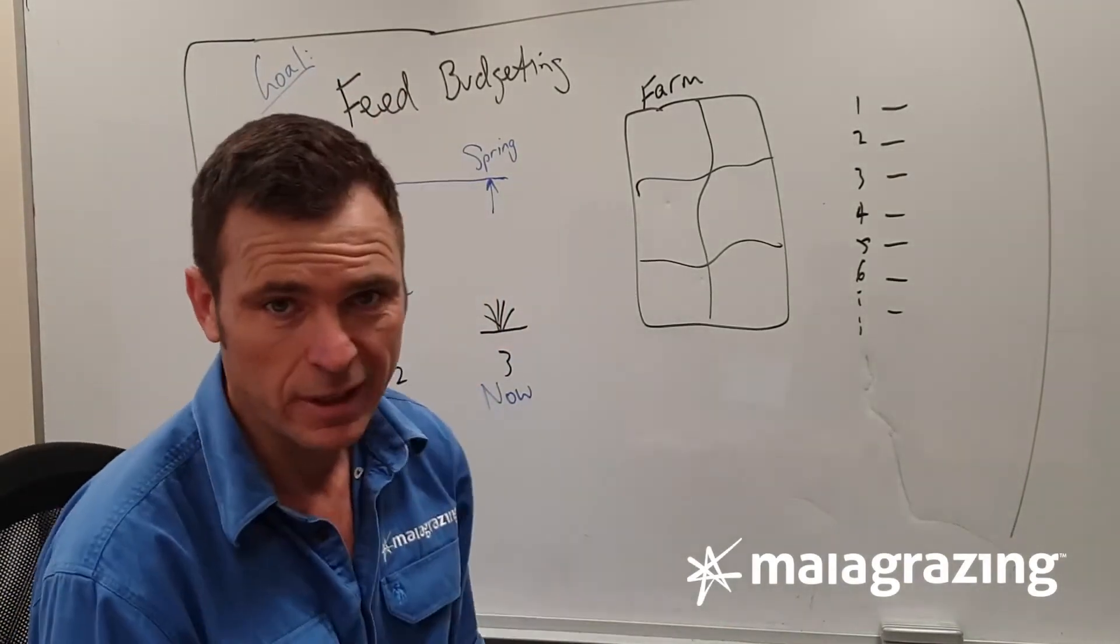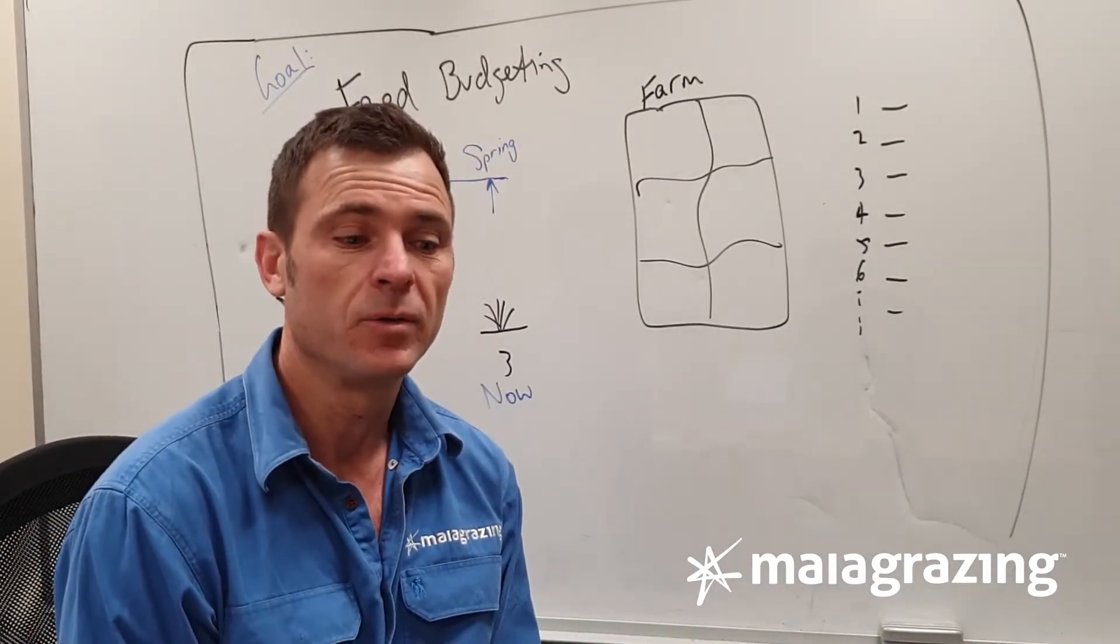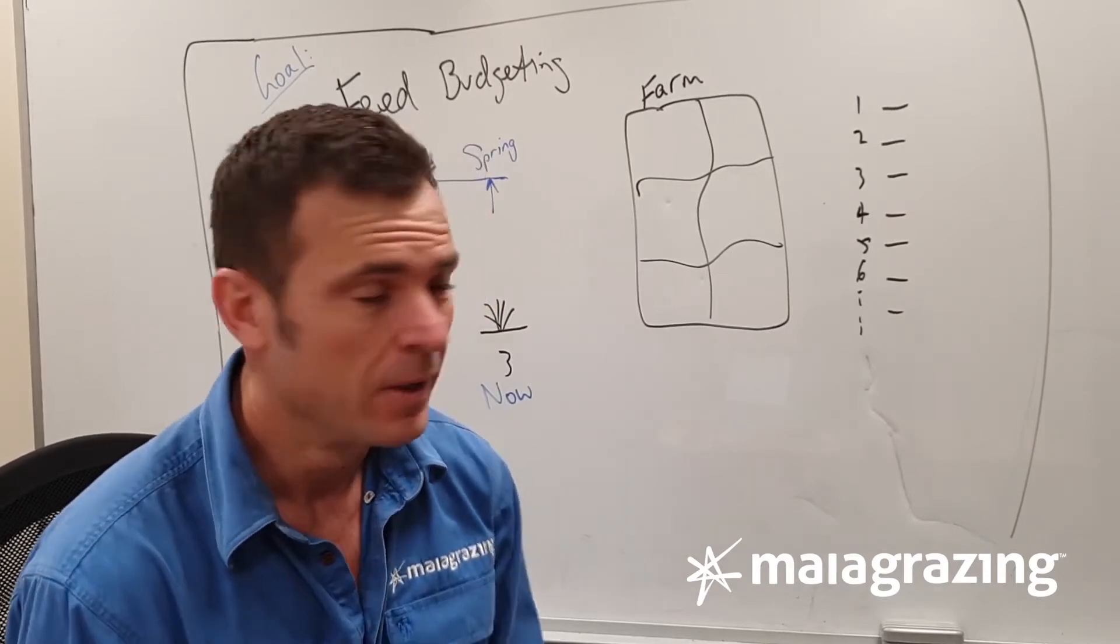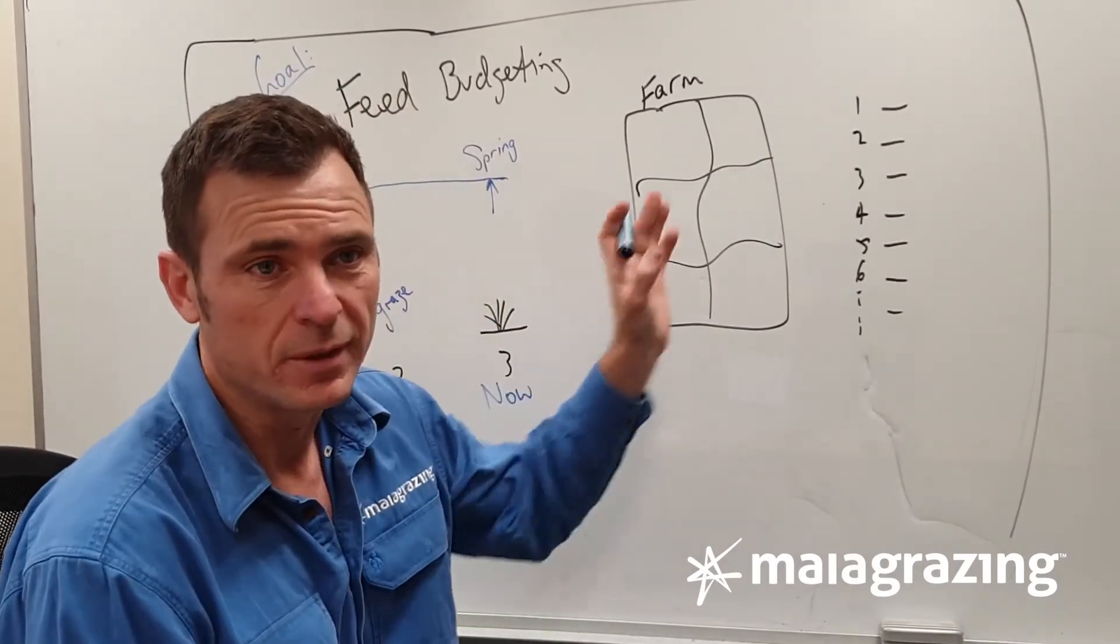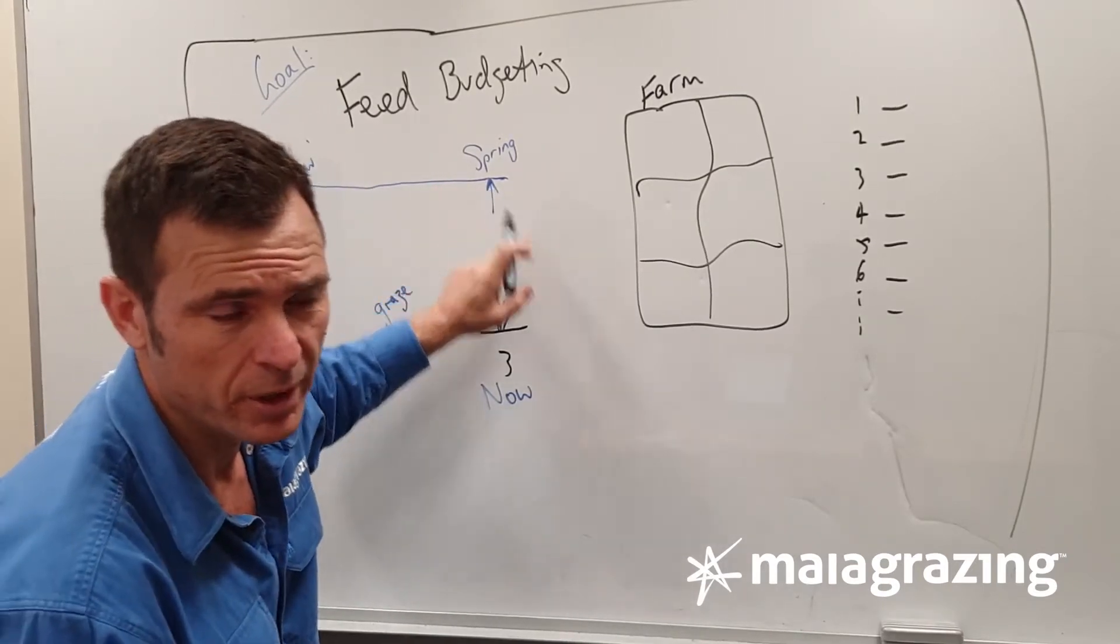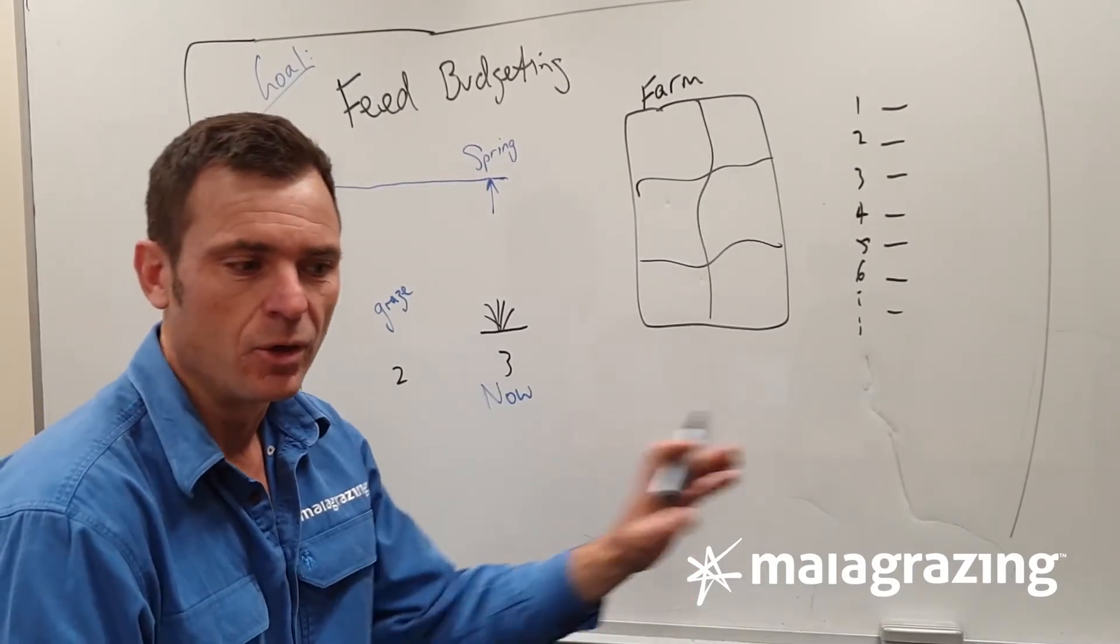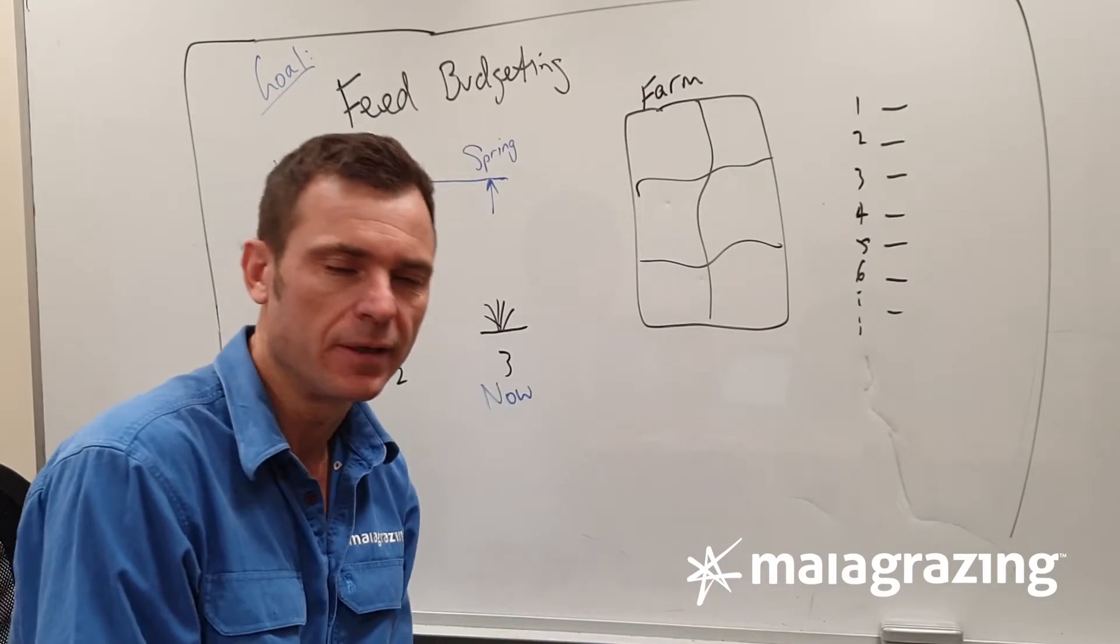Our goal here is to work out how much feed we've got, how much forage we've got, and ultimately how long is it going to last because that's the million dollar question. Right now it might be autumn or fall. We've got to get through winter into the growing period of spring or summer. How much forage have we got from now until it starts growing again? That allows us to work out what the cows, steers, and heifers are going to get.